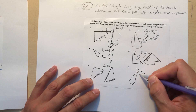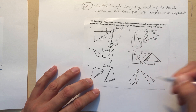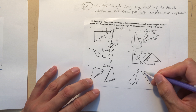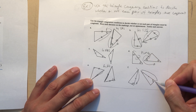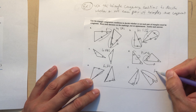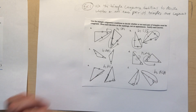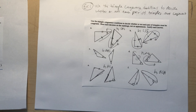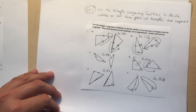Problem F: this one flows from that angle, to that side, to that angle — angle-side-angle. The other triangle flows the same way — angle-side-angle. So by Angle-Side-Angle (ASA), they are congruent.